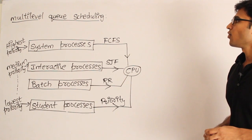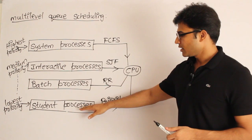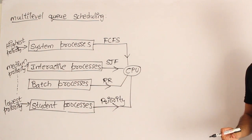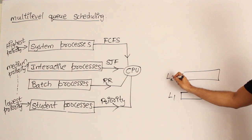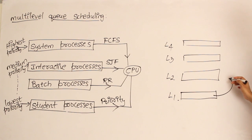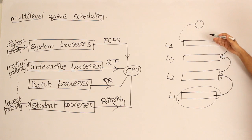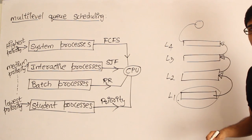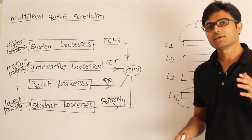The solution to starvation is that we don't let a process sit in the student-level queue for too long. Instead, we use multi-level feedback queues. We have various levels of queues — L1, L2, L3, and L4 — with various priorities. After some time, we move a process from the least priority level up to the next, and then up again, until it finally gets executed at the CPU. So no process is going to starve for a long time because it will keep moving up.